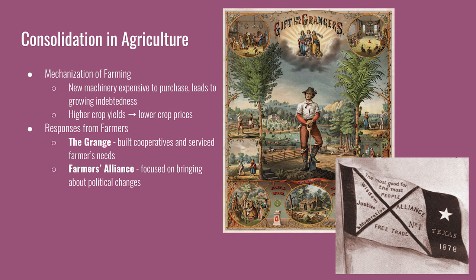In response, farmers got together and created alliances and cooperatives to improve their condition. The first one is the National Grange of the Order of Patrons of Husbandry, or the Grange for short. They created cooperatives and built grain elevators to store grain before selling it or hold it until prices increased. The Farmers Alliance was more focused on political change—creating political parties or lobbying politicians for legislation that would benefit farmers, such as having the federal government regulate the rates railroads charged for transporting crops, since railroad monopolies could raise prices as they pleased.